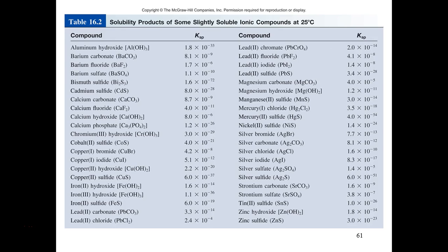Here are some common solubility product constants — equilibrium constants for common ionic compounds. Some have rather small numbers and some have relatively larger numbers. The larger the Ksp value, the more easily and readily soluble an ionic compound is in water. The lower the Ksp value, the less soluble it is in water.